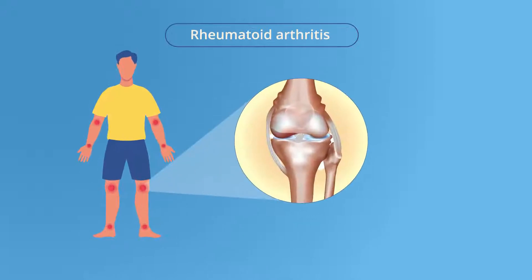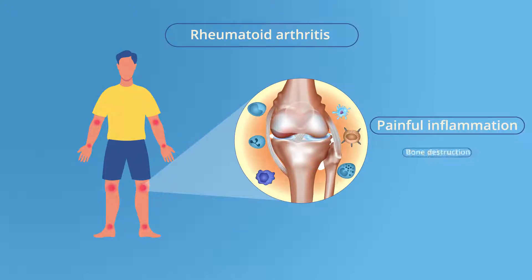Rheumatoid arthritis is an autoimmune disease in which immune cells attack the body's own joints, causing painful inflammation and even bone destruction.